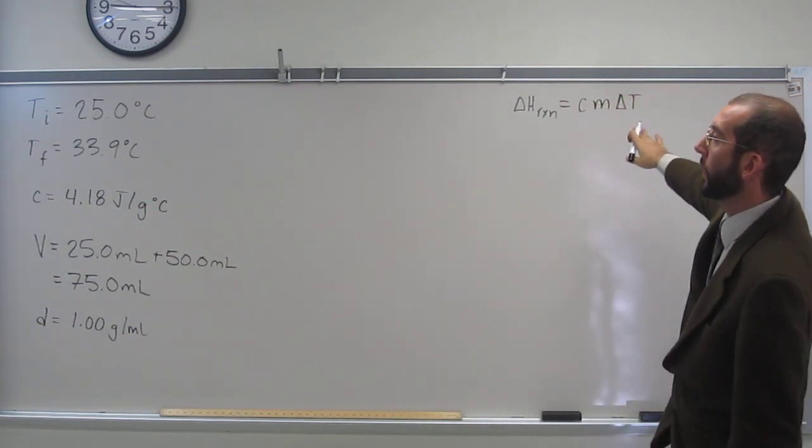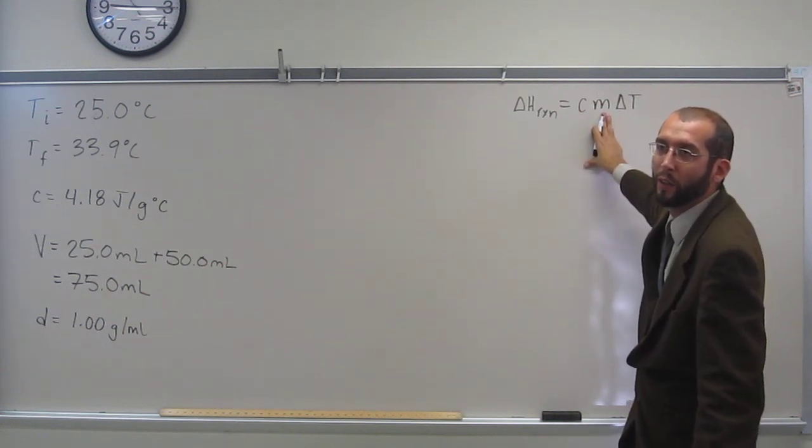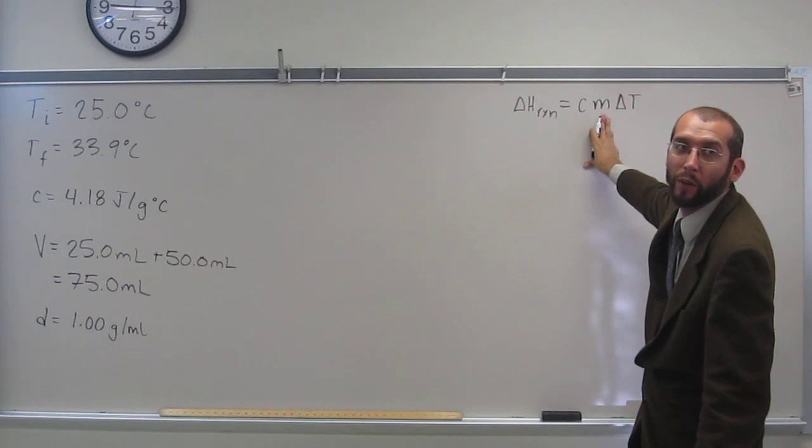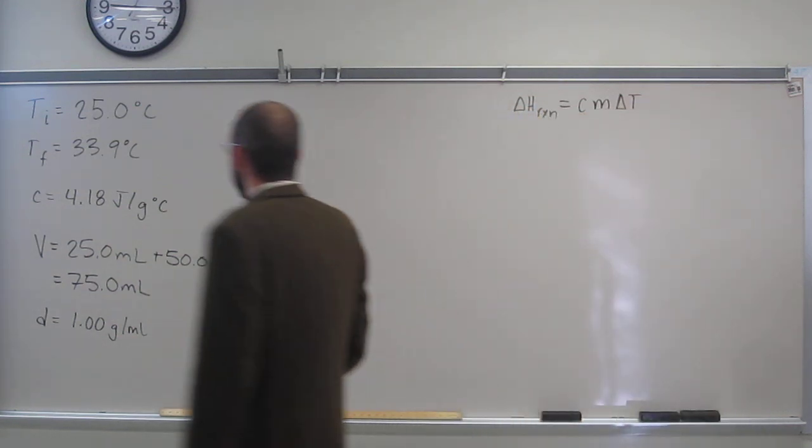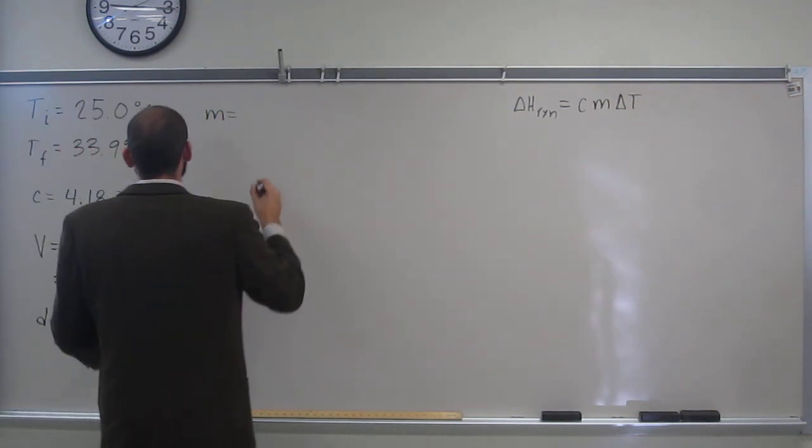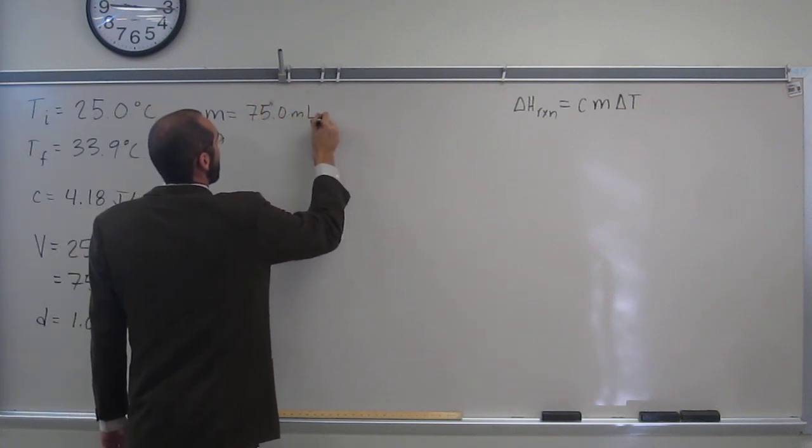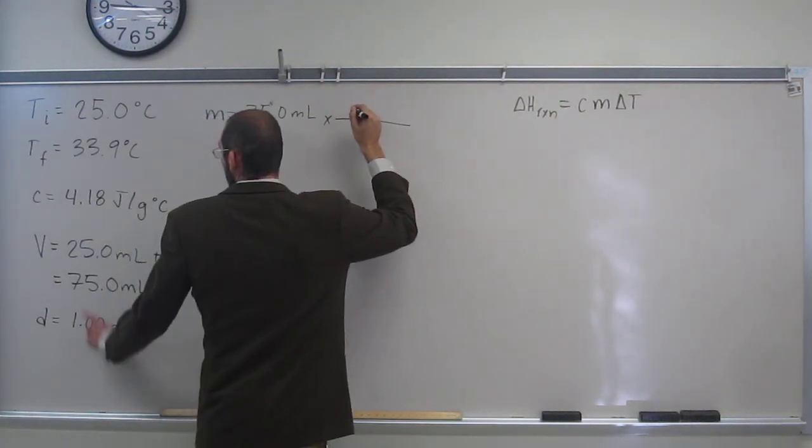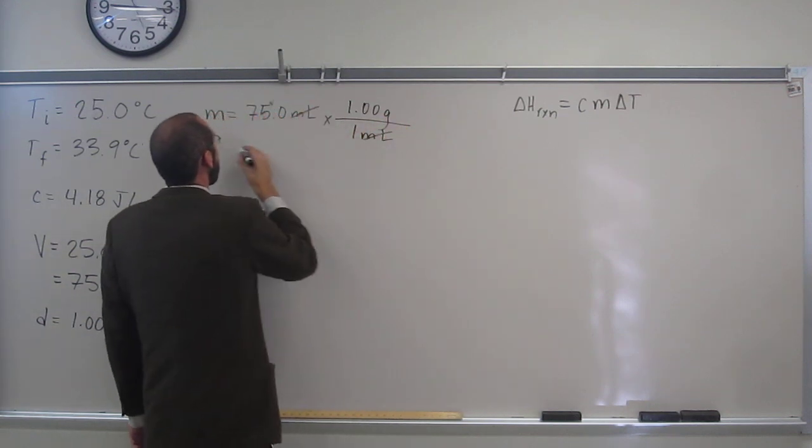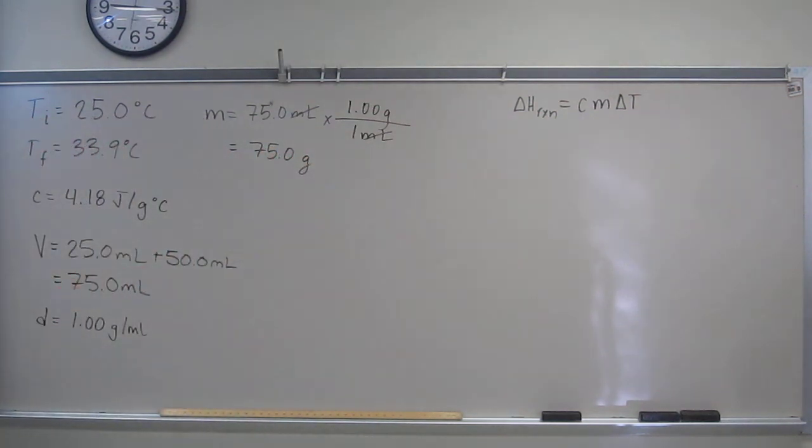So that's what we're looking for, but do we have the mass of this solution? We can figure it out because we got the volume and the density. So let's figure out the mass. The mass is going to be 75.0 milliliters times 1.00 grams per milliliter.